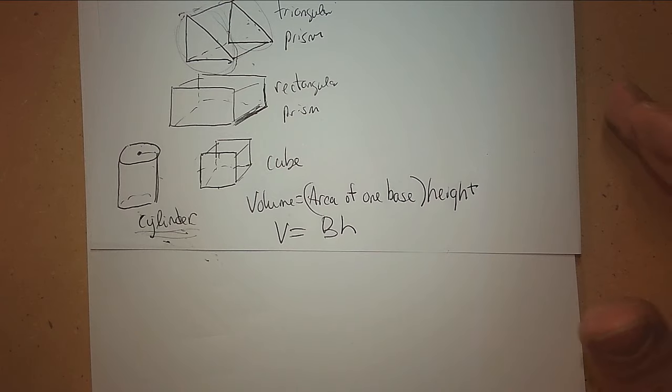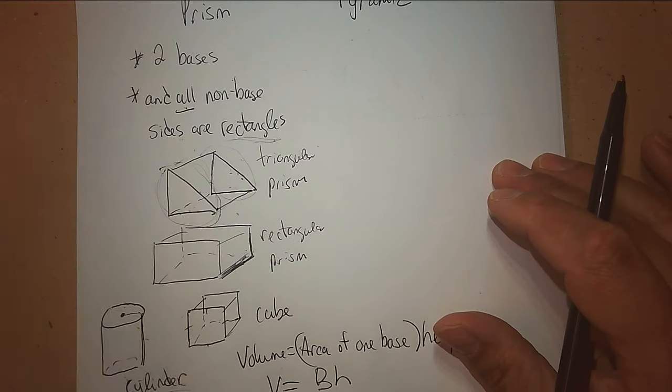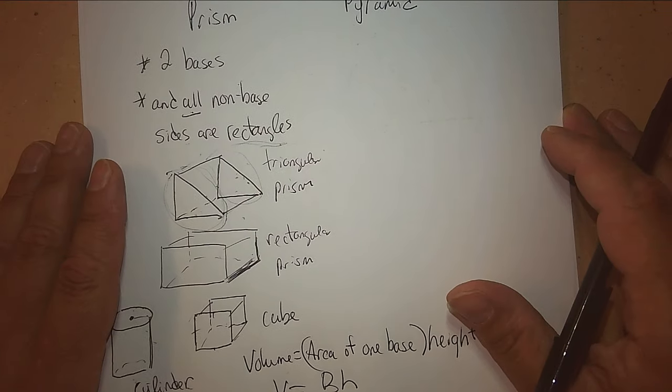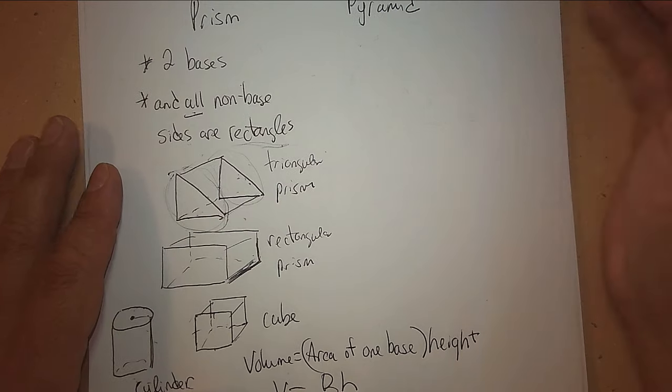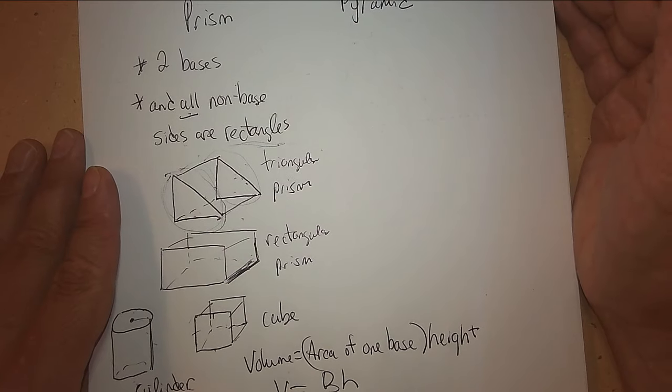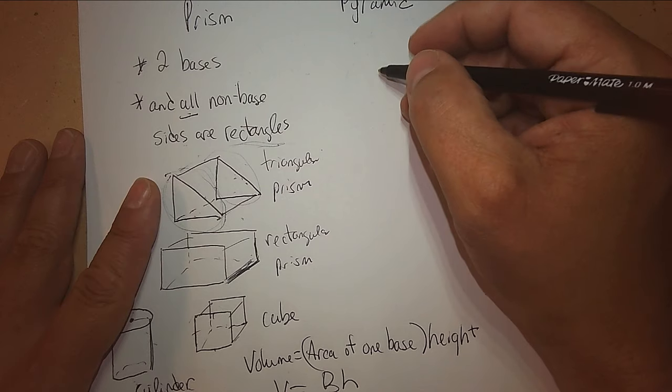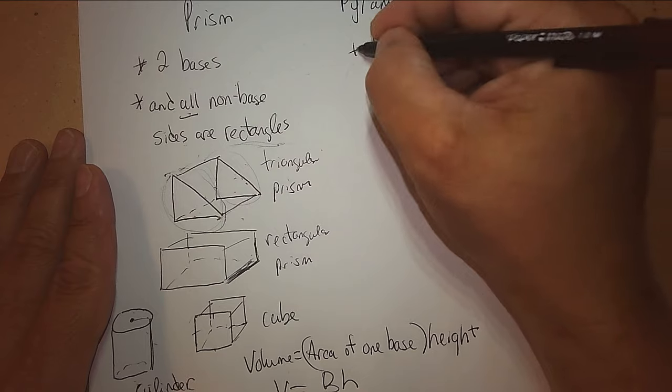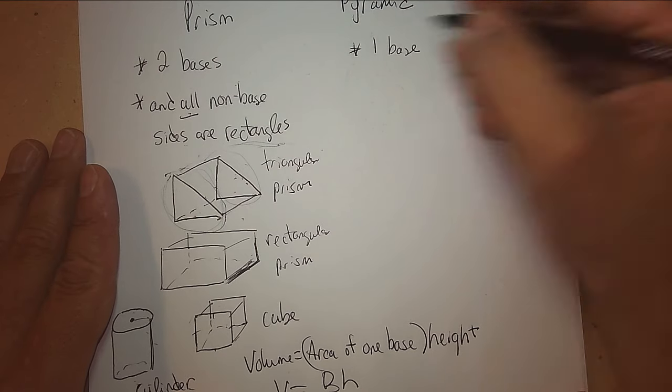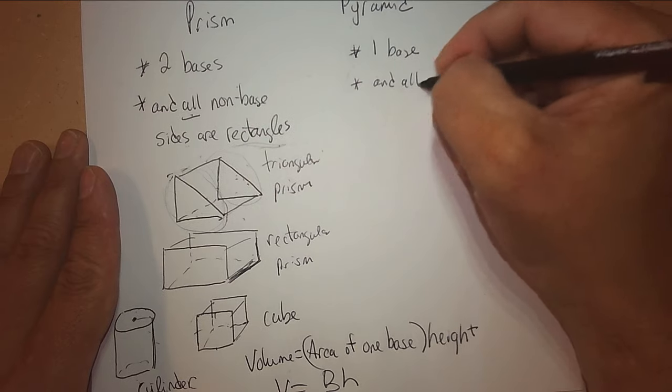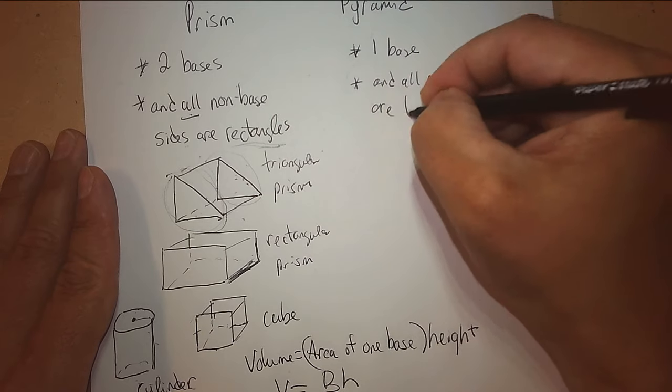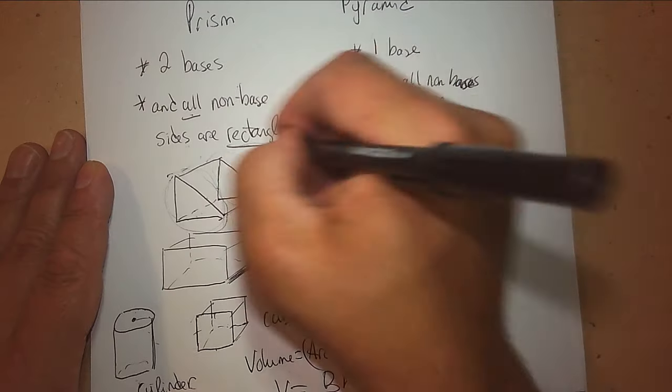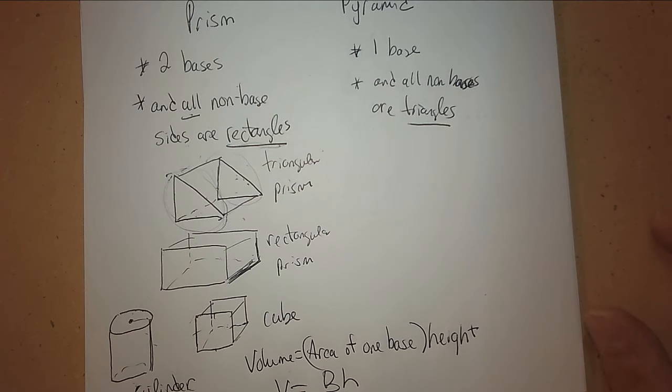Now, do you know what a pyramid is? There is. Where is the most famous one? In Egypt, right? Now, that's not what all pyramids look like. You know what shape the bottom of that pyramid is, the famous one in Egypt? I think it's a square. I'm not good at drawing pyramids. I don't even know if I'm even going to attempt it. I'm going to say one base. I can write that down. And all non-bases are triangles. So, that's a good indicator to know if it's a prism or a pyramid. A pyramid obviously comes up to a point, right? It has one base. And those triangles on the side come up to a point.